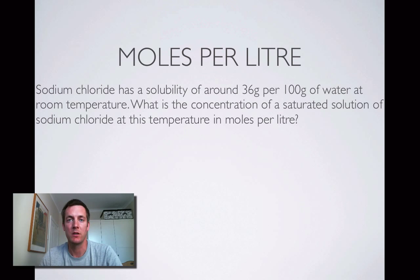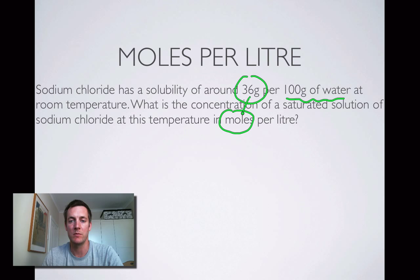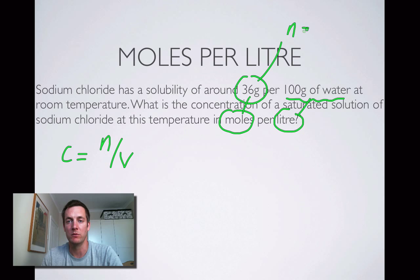Let's finish with an example of finding concentration in moles per liter. Sodium chloride has a solubility of 36 grams per every 100 grams of water. What is the concentration of a saturated solution in moles per liter? We need to turn 100 grams of water into liters of solution. Concentration equals moles divided by volume, and since we're given a mass, the number of moles equals mass over molar mass. The formula is NaCl, so we can calculate the molar mass.